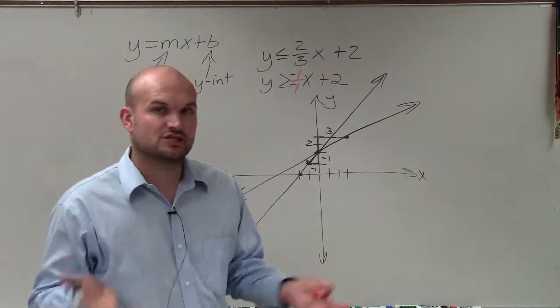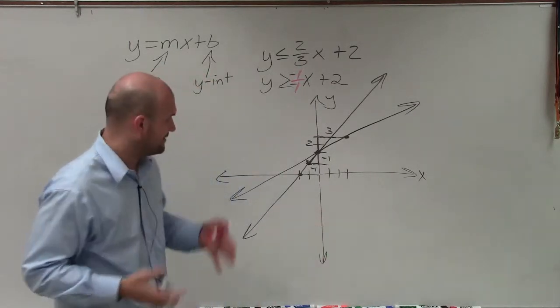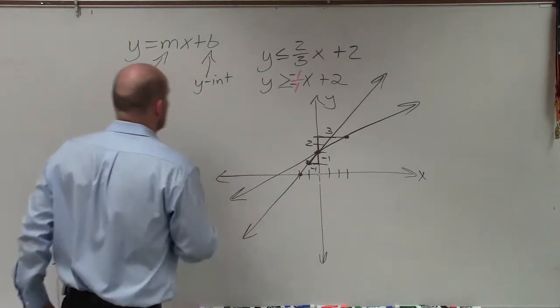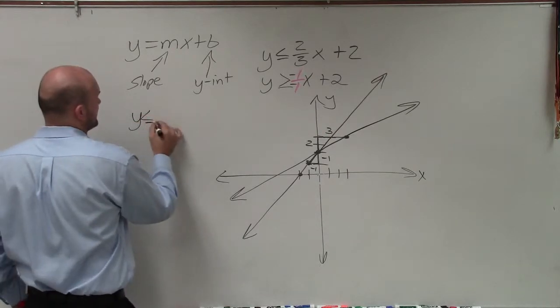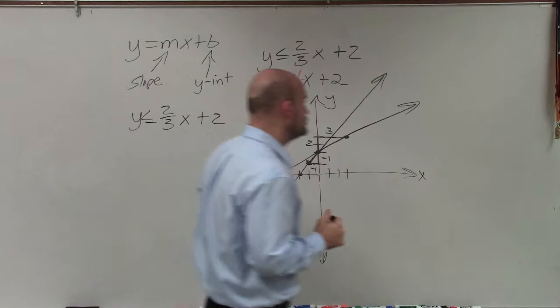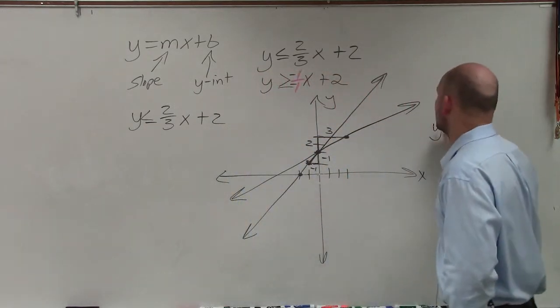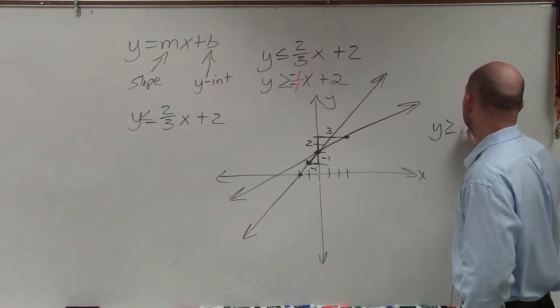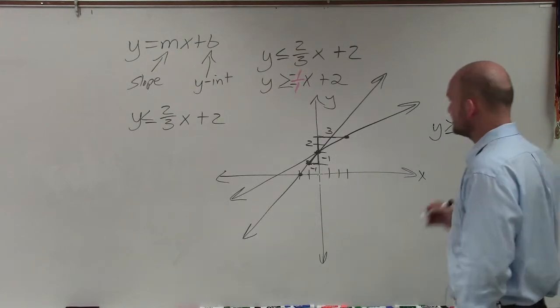Now the next thing we want to do is determine the shading. Where are we going to be shading this graph? And to do that, we need to use our test points. Now I am going to do that separately for each equation. And the best test point to choose when determining shading is (0, 0), as long as neither of your lines go through your test point.